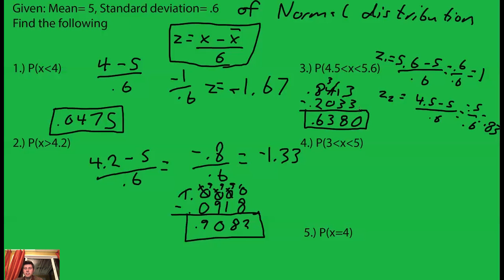So we have a 63.8 percent chance of being between 4.5 and 5.6.